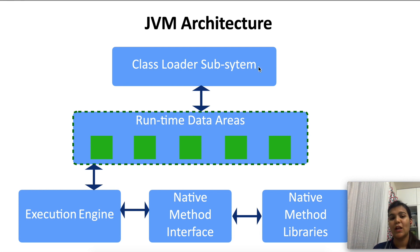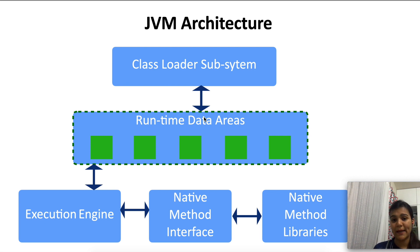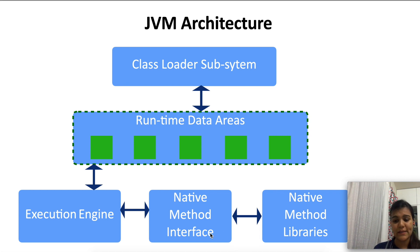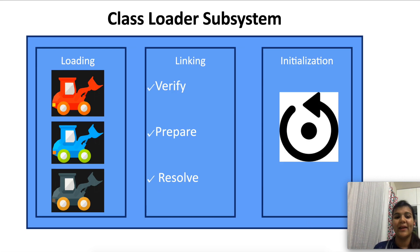JVM performs basically two main functions: loading and executing. It loads the class files into the runtime data areas and then executes the bytecode instructions that are present in the class file using the native method interfaces and the native method libraries. We'll be discussing the class loader subsystem in detail now.